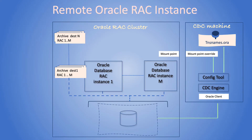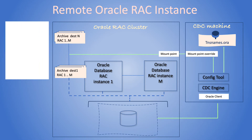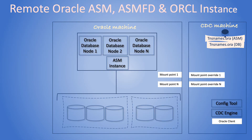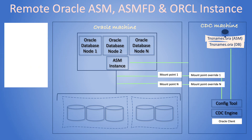For a remote RAC setup, CDC should have access to archive logs and Oracle client. For remotely replicating from an ASM-managed Oracle instance, we need the TNSNAMES entry for both ASM and the Oracle DB instance, which can be combined into one file. All the ASM disks need to be mapped to a mount point that CDC can access. Alternatively, logs can be multiplexed out of ASM.